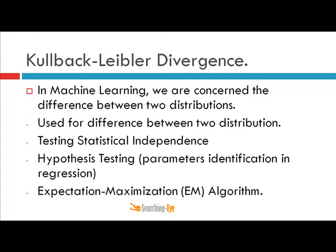In machine learning we are generally concerned with the difference between two distributions. Kullback-Leibler divergence is used to measure how different two distributions are. If you want to measure the statistical independence of two random variables x and y, you can use KL divergence. For hypothesis testing — for example, identifying the number of parameters in a regression model to avoid overfitting — you can again use KL divergence. Two of the most important algorithms in machine learning, expectation maximization and expectation propagation, also use Kullback-Leibler divergence.